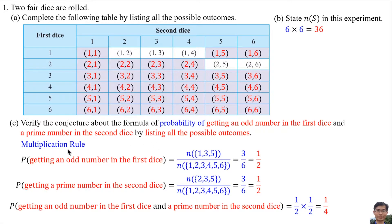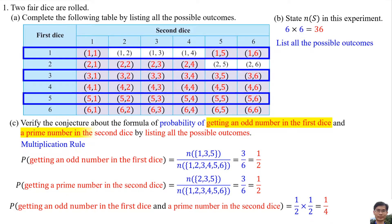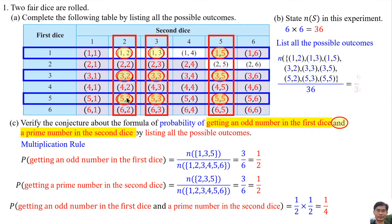To verify using the formula, we look at the total 36 possible outcomes. The probability of getting an odd number on the first dice and a prime number on the second dice — by listing all the possible outcomes, we get 9 out of 36, which equals 1 per 4.